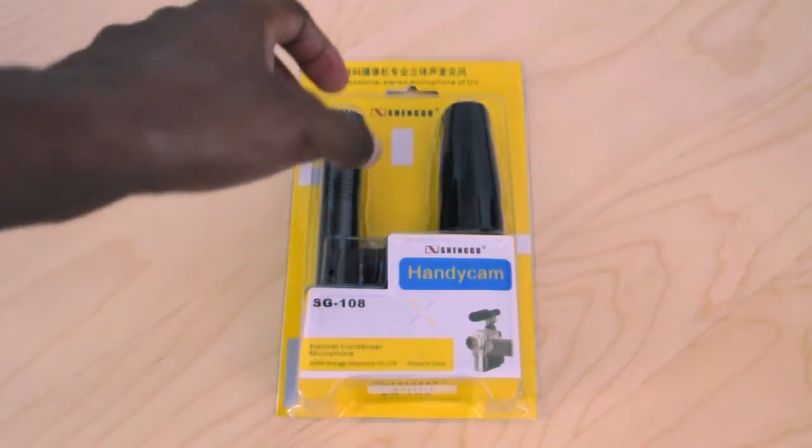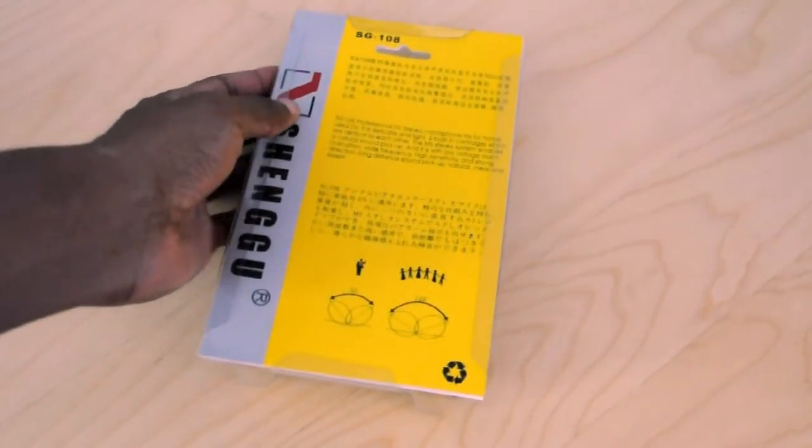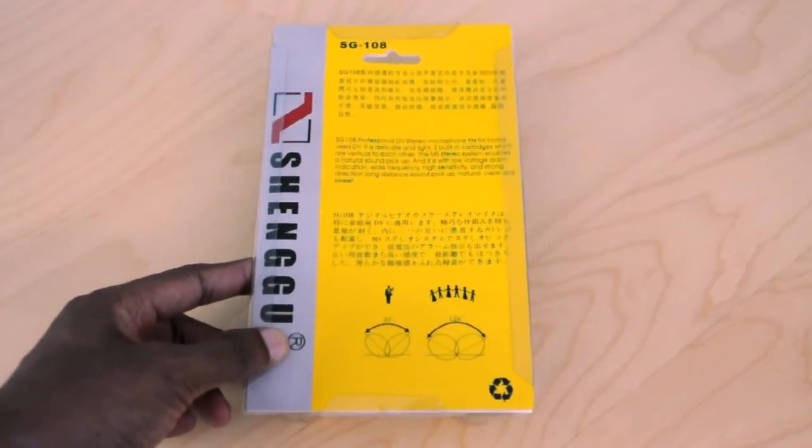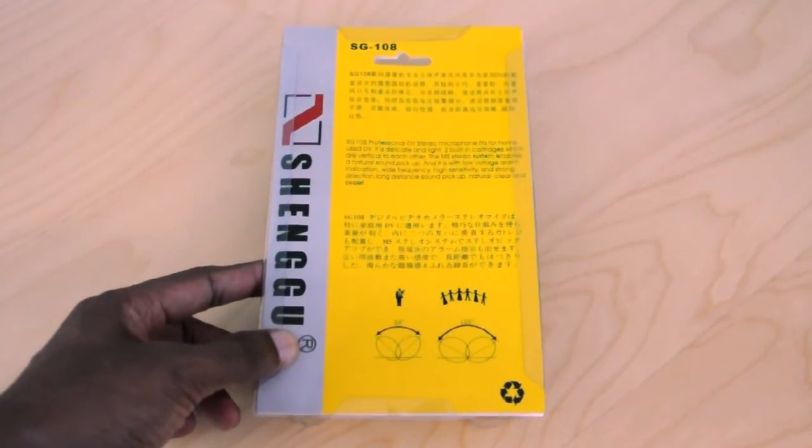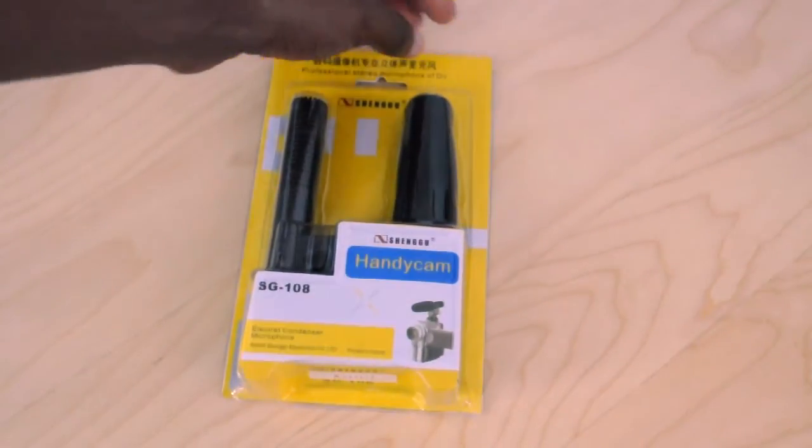So jumping right in here we flip the packaging over. It's got Senggu on the left side and SG-108 at the top. It's also got a brief description of the microphone in a couple different languages.